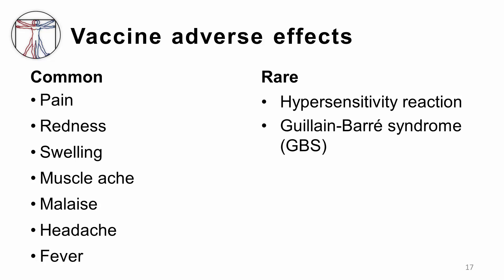The most common adverse effect of influenza vaccine is pain at the site of injection. Other systemic effects might include fever, headache, and muscle ache, which typically last for less than 48 hours. More rare adverse events associated with the influenza vaccine include immediate hypersensitivity reaction and a condition known as Guillain-Barré syndrome. Guillain-Barré syndrome, or GBS, is a rare disorder in which a person's own immune system damages their nerve cells, causing muscle weakness and sometimes paralysis, which is usually temporary but can leave long-term sequelae.